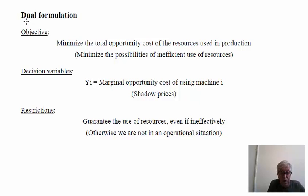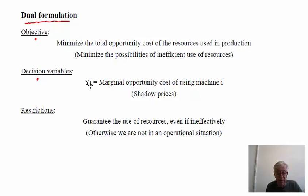We now look at the dual formulation in the context of a typical production problem. The objective is to minimize the total opportunity cost of the resources used in production — essentially minimizing the possibility of using resources inefficiently. The decision variables are the shadow prices, which are the marginal opportunity costs of using the resources. The restrictions ensure we are in a production situation. The solution domain contains inefficient points in its interior and efficient points on the boundary.